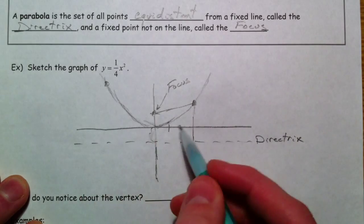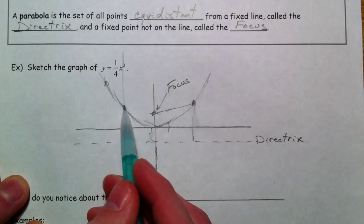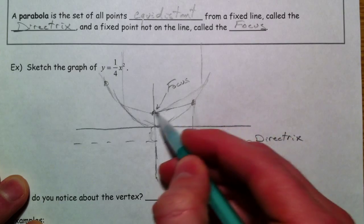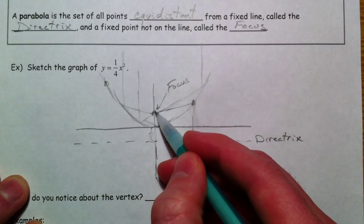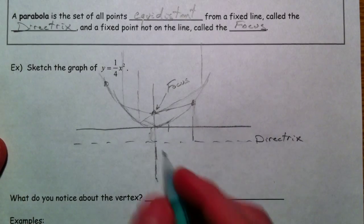So, parabolas are pretty cool because everything that comes in gets reflected towards the focus. And so we use parabolic shaped satellite dishes because everything goes towards the focus and this is the receiving part.